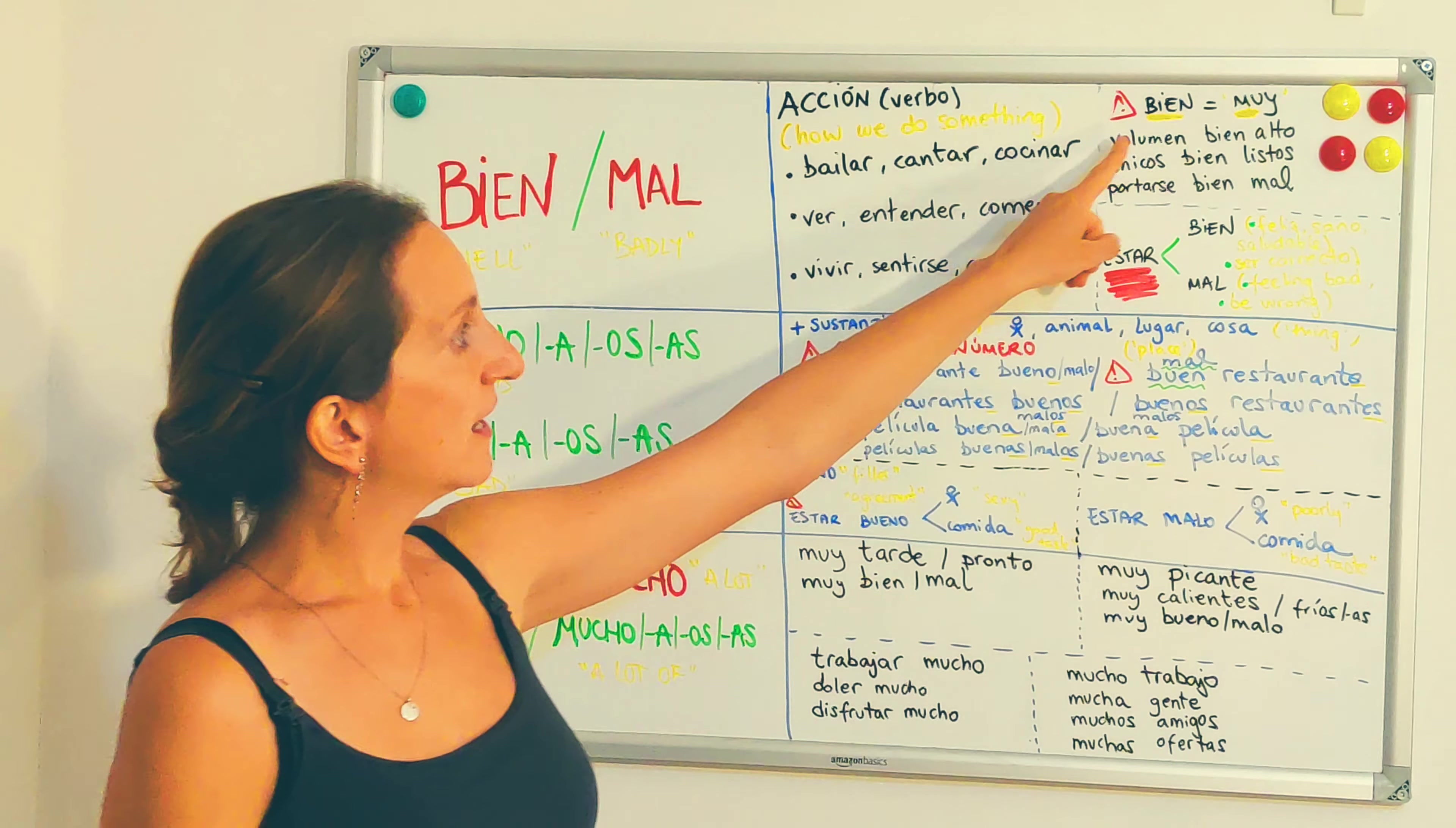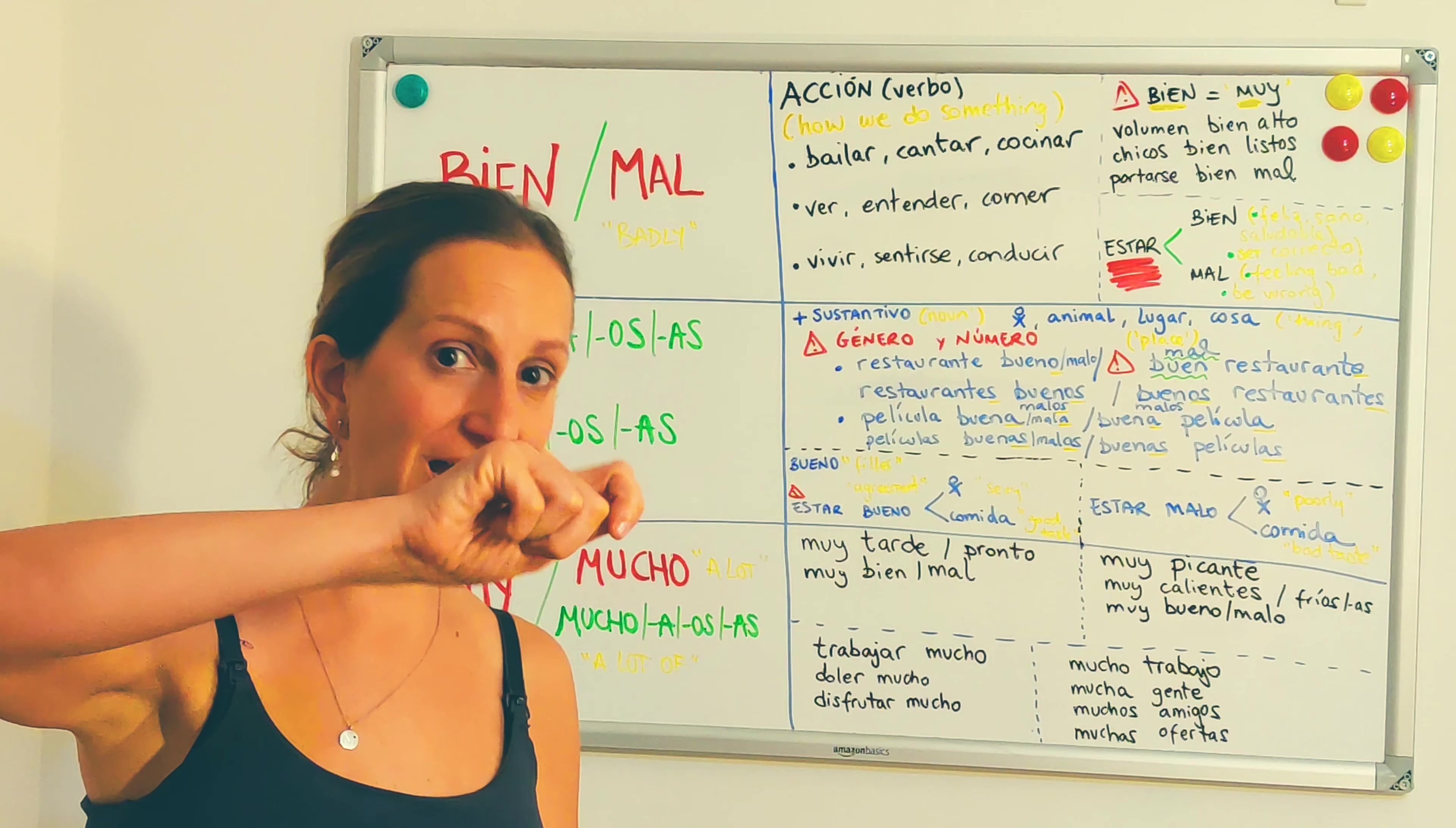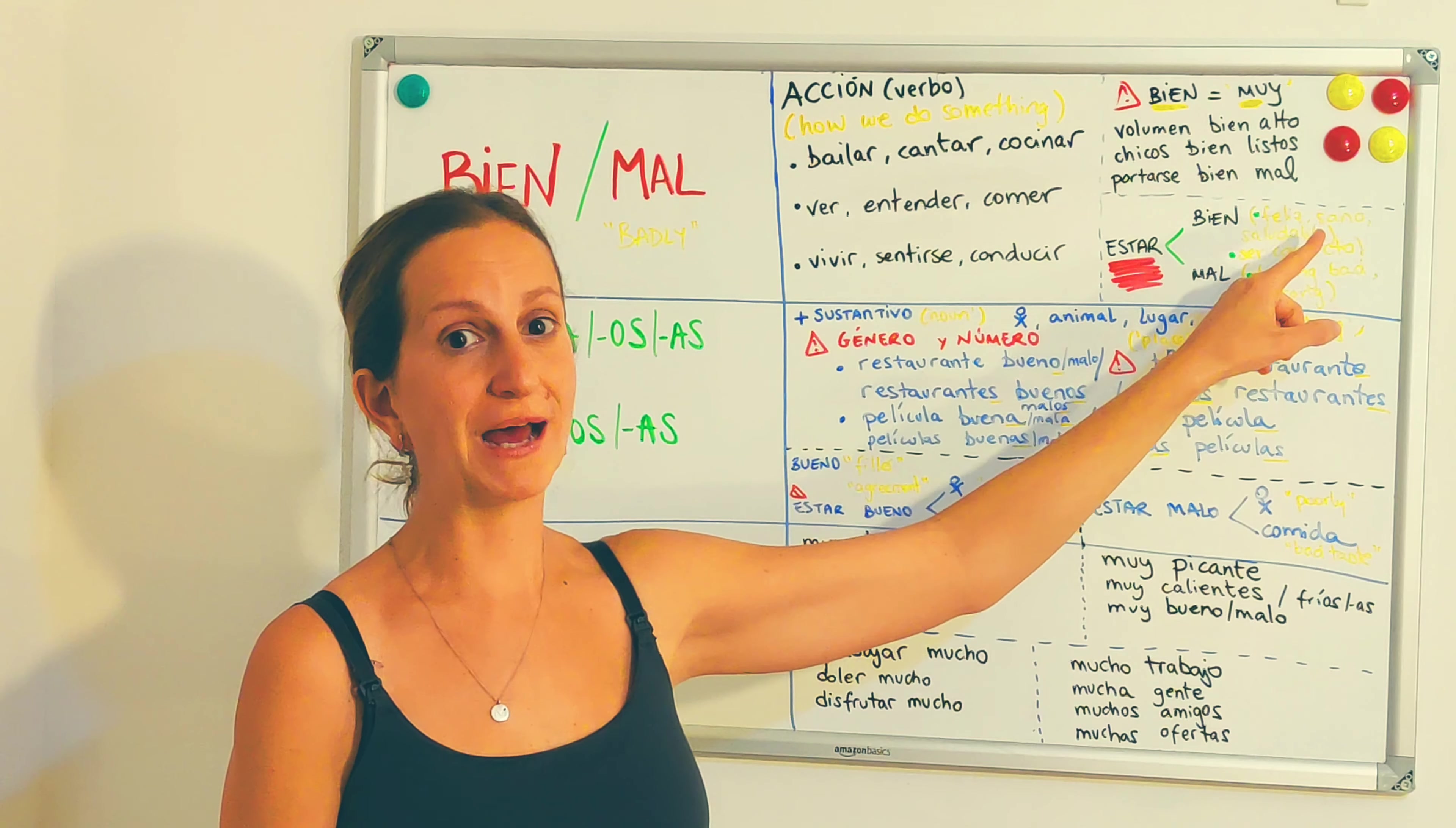In that sense, I've written here as well, bien the same as muy. For instance, el volumen de la televisión está bien alto. Está muy alto. Por favor, bájalo. Los chicos son bien listos. Son muy listos. The guys are very clever. Or their behavior is not very good. They behave very badly. Portarse bien, mal.